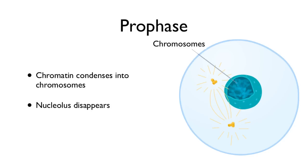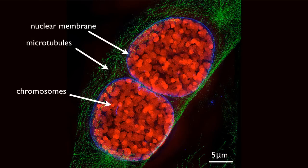The nucleolus disappears during prophase — the nucleolus is the extra dark-staining part of the nucleus that makes ribosomes; it disintegrates and you can't see it anymore. Microtubule assembly also begins at this stage. This image shows two mouse cell nuclei in prophase captured with three-dimensional structured illumination microscopy, with nuclear membranes in blue and microtubules in green — certainly one of the prettiest images of prophase.